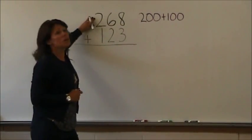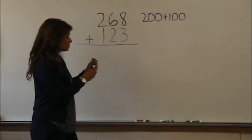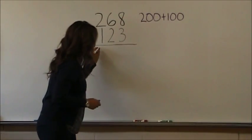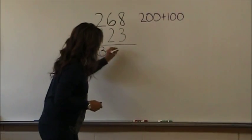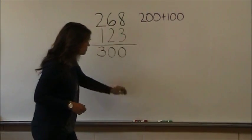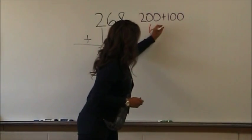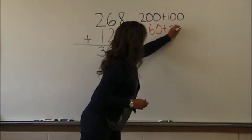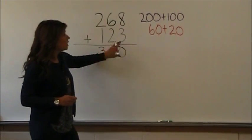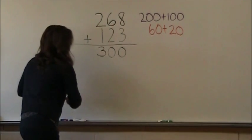The two represents the two hundred, and the one represents the one hundred. And then I actually put three hundred here. Now I'm going to go to the tens column. Sixty plus twenty. The six represents the sixty, and the two represents the twenty. I'm going to put an eighty.